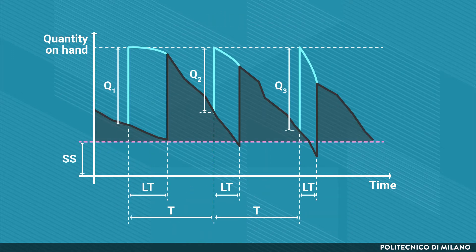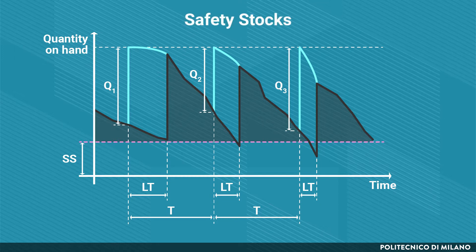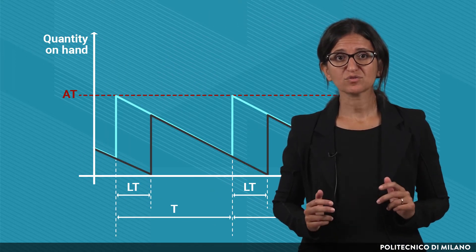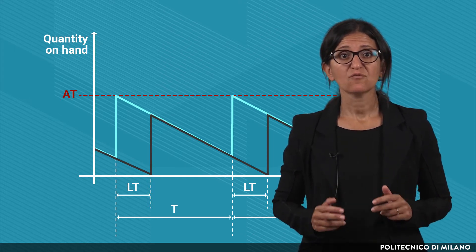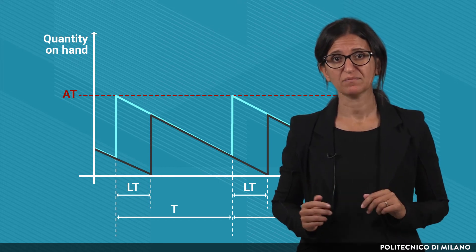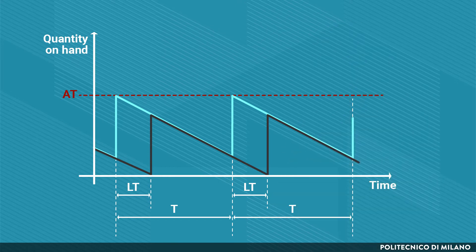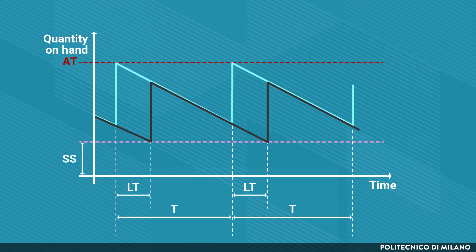Up to now we have assumed for the sake of simplicity that demand and lead time are predictable. However, as we have already said during the previous lecture, the demand and the lead time are usually not precisely predictable, and thus it is necessary to add, to the regular stocks, also the so-called safety stocks that allow protecting against stockout. Therefore, in order to consider the uncertainty, we need to change the graph we have previously seen for the expected inventory level and the expected availability. More specifically, this should be moved up by a quantity equal to the safety stocks.